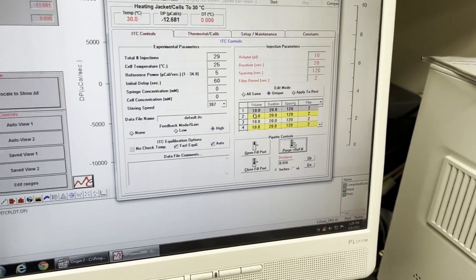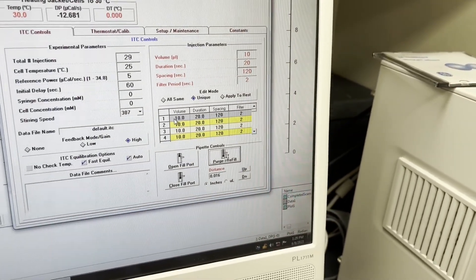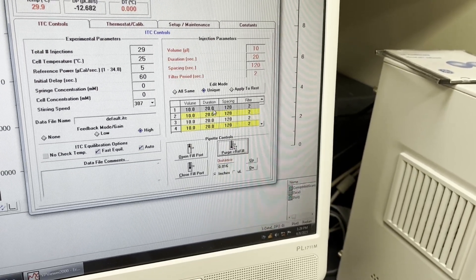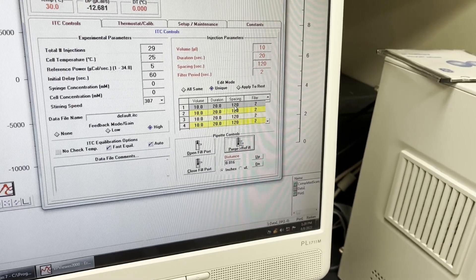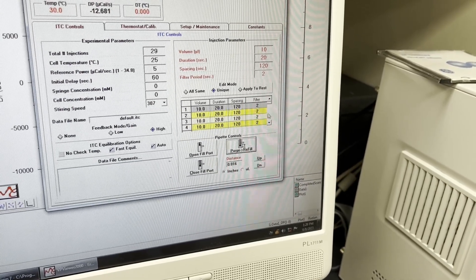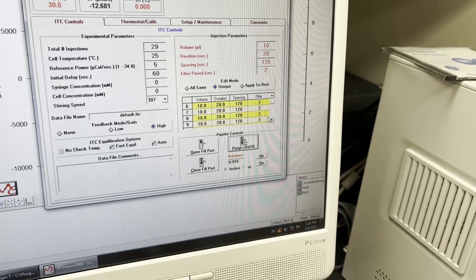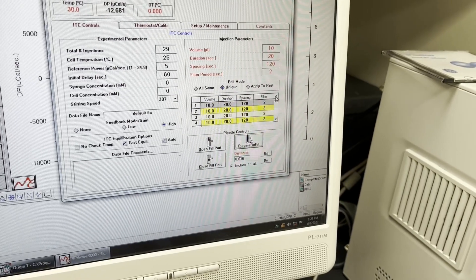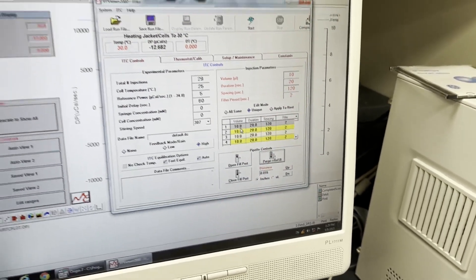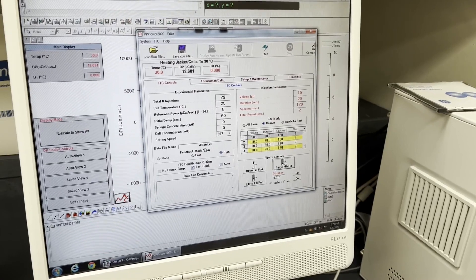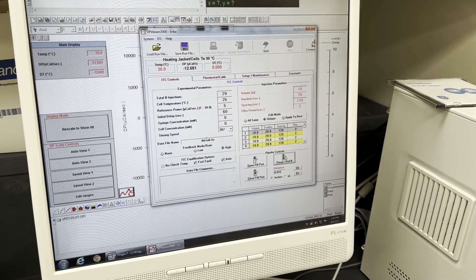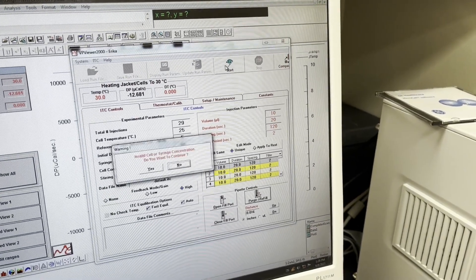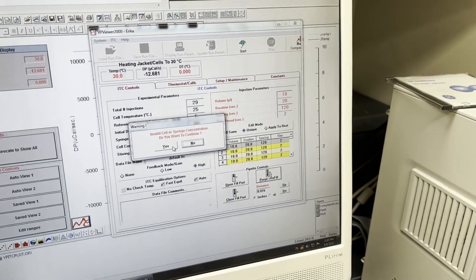You can also adjust how many microliters for each injection it's going to inject, how long those injections are taking, and the time in seconds between injections. These are all pretty standard to start with, but if you would like you can adjust those for your experiment. Once you have all of that set up and you've put in a name other than default, then all you do is go to the start button.